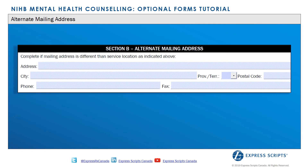In Section B, providers may add a second address to their NIHB profile. If set up, providers can request general communications be sent to this address.